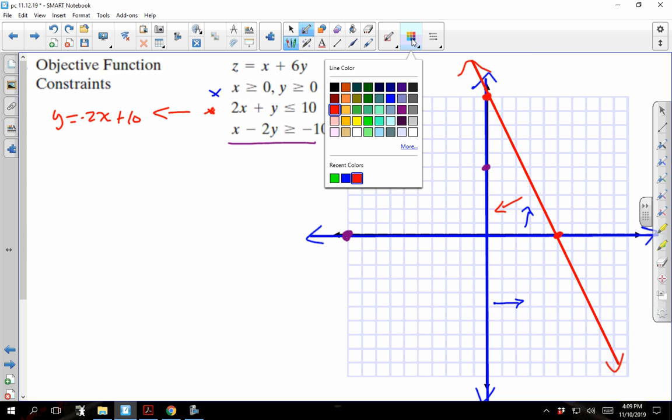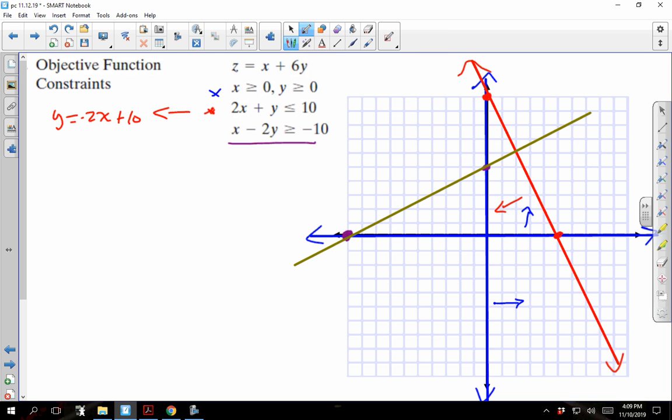If I go ahead and graph that, we get a line that goes through like so. This is going to be another solid line. And again, we're going to plug in 0, 0. Is 0 greater than or equal to negative 10? That's true. Since that's true, we're going to shade this side of that line.